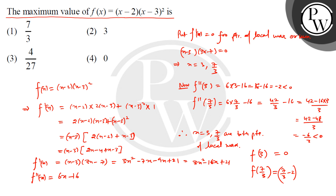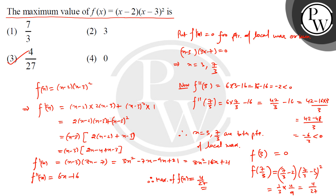f(7/3) = (7/3 - 2)(7/3 - 3)² = (1/3)(-2/3)² = (1/3)(4/9) = 4/27. Since f(3) = 0 is less than 4/27, the maximum value of the function f(x) is 4/27. Therefore option 3 is the correct answer.